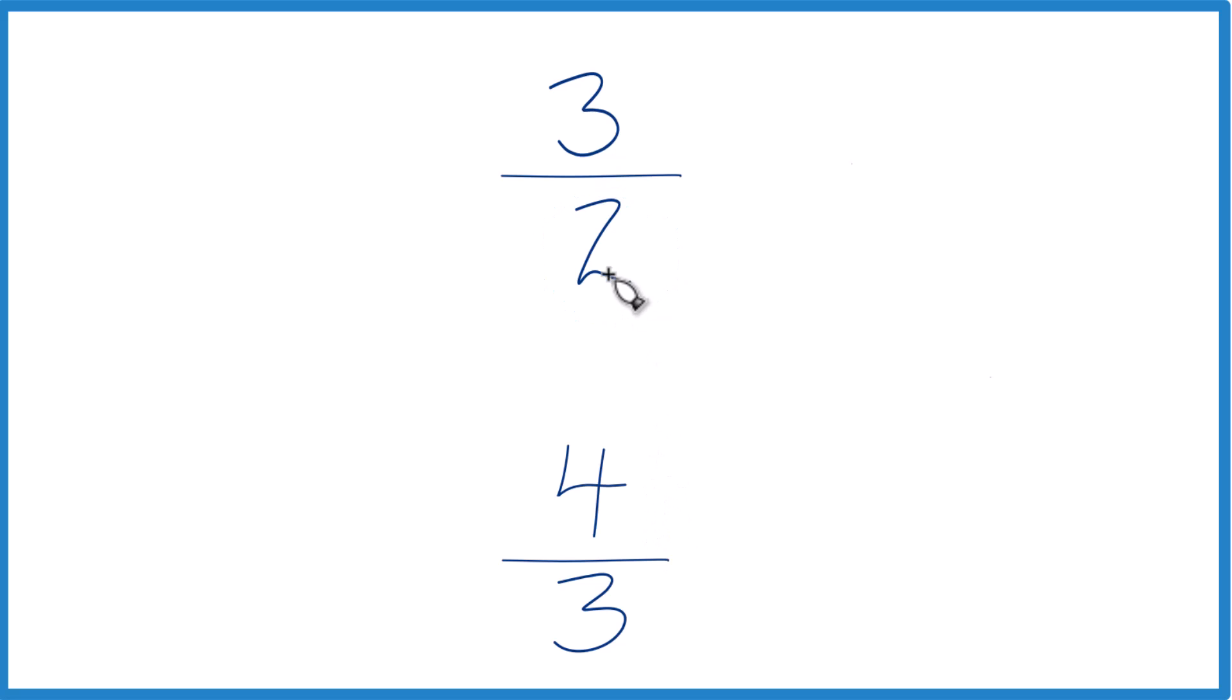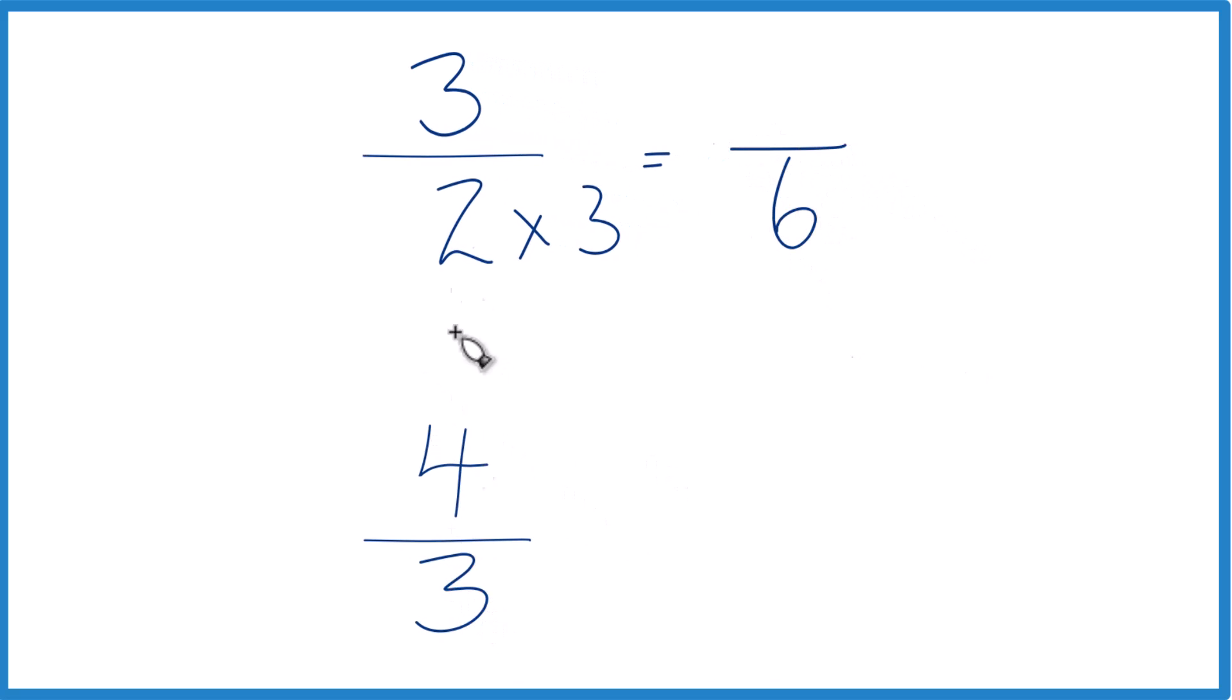So let's do that. Let's multiply 2 times 3. 2 times 3, that equals 6. Down here, let's multiply 3 times 2, because 3 times 2, that equals 6.